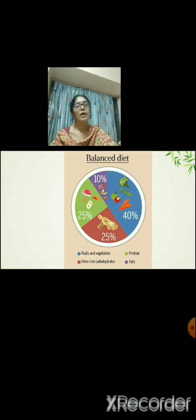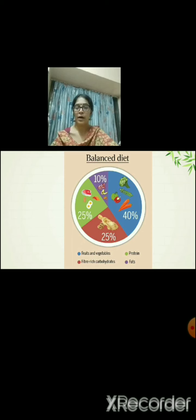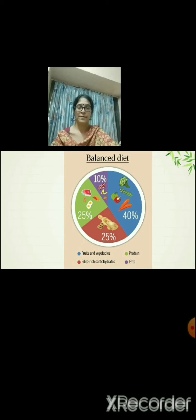40% of our diet should include fresh vegetables and fresh fruits, which give us more nutrients like vitamins, minerals and antioxidants. Then 25% should be fiber rich carbohydrates. Next, 25% should be protein rich food. Then only 10% of our diet should be fats. This shows that less amount of fats should be consumed by us.